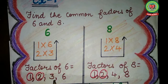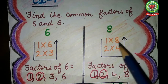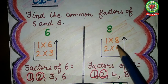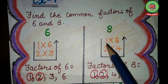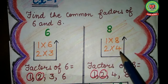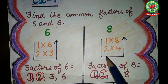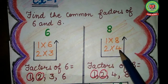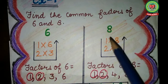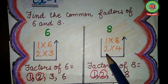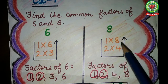Now I will find factors of 8. Again I will start with table of 1. On 1 table, 8 comes on 8 — 1 eight is 8. After 1 table, turn to 2 table. On 2 table, 8 comes on 4 — 2 fours are 8. After 2 table, turn to 3 table — on 3 table, 8 doesn't come, so we move to the next table, which is 4. On 4 table, 8 comes on 2 — 4 twos are 8 — but the numbers are repeating, so we will make a U sign. So factors of 8 are 1, 2, 4, and 8.